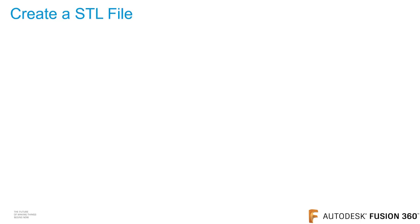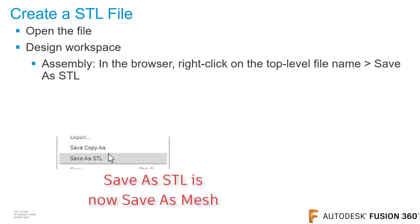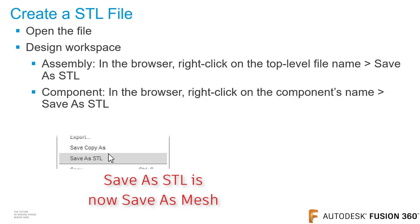When sending a file to a 3D printer, you can simply create an STL file. To do so, open the file. If you want to create an STL file for the entire assembly, in the browser, right-click on the top-level file name and click Save as STL. If you want to create an STL file of a component in the browser, right-click on the component's name and click Save as STL.